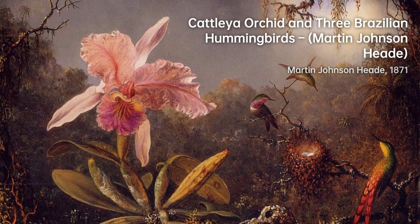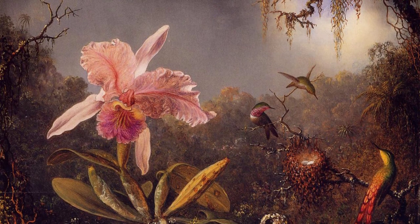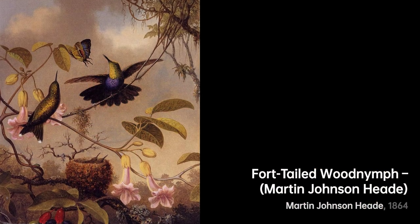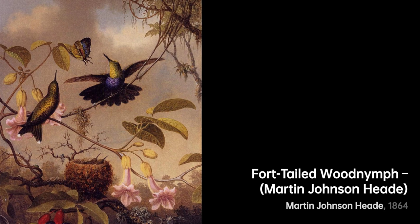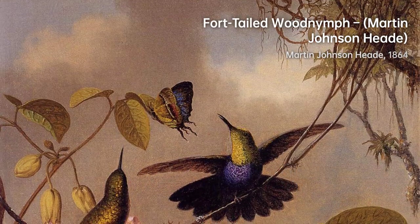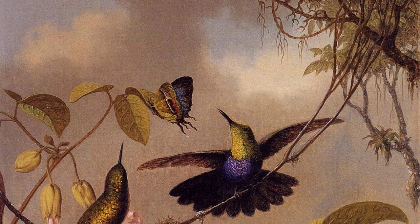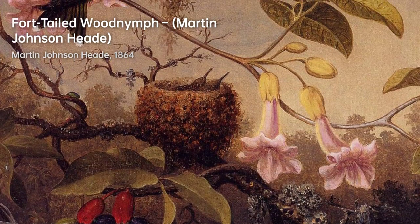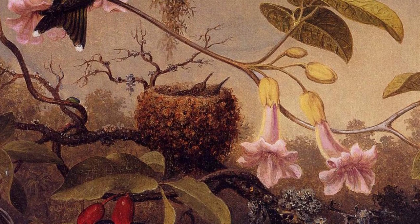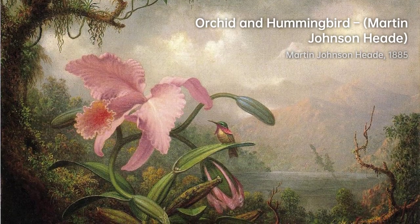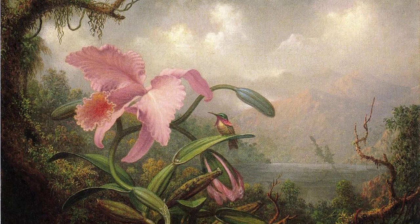Heade's passion for art led him to travel abroad and live in Rome for two years. In 1841, he exhibited his work at the Pennsylvania Academy of the Fine Arts in Philadelphia, and in 1843, he showcased his art at the National Academy of Design in New York. After another trip to Europe in 1848, he began exhibiting regularly and became an itinerant artist until he settled in New York in 1859.